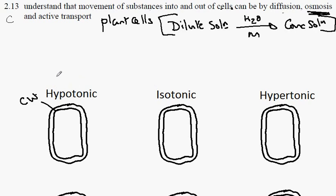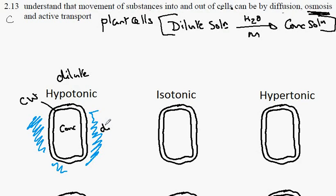A hypotonic solution is where the surrounding fluid is dilute. So the fluid around the cell is considered to be dilute in comparison to the contents. So this is concentrated and this is considered dilute. That's a hypotonic solution.